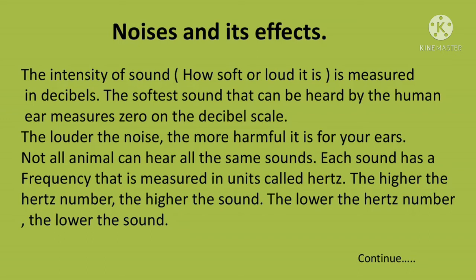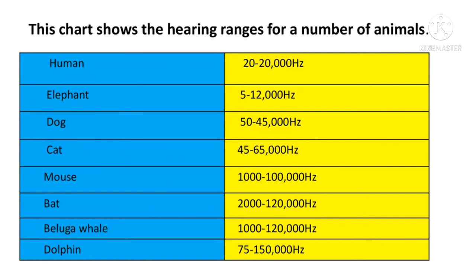Here is a chart showing the hearing range of a number of animals. Humans: 20 to 20,000 Hz. Elephants: 5 to 12,000 Hz. Dogs: 50 to 45,000 Hz. Cats: 45 to 65,000 Hz. Mice: 1,000 to 100,000 Hz. Bats: 2,000 to 120,000 Hz. Beluga whales: 1,000 to 120,000 Hz. Dolphins: 75 to 150,000 Hz.